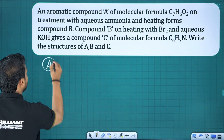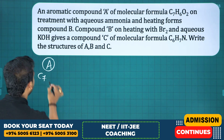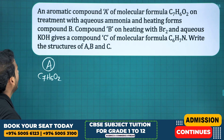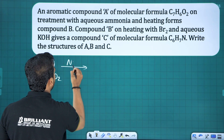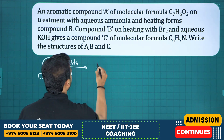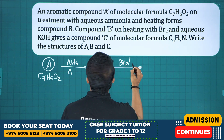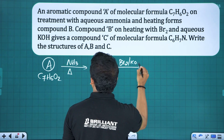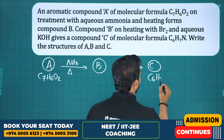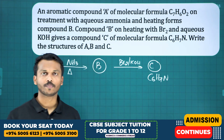Question number one: an aromatic compound A has the formula C7H6O2. On treatment with aqueous ammonia and heating, it forms compound B. Compound B on heating with bromine and aqueous KOH gives a compound C of formula C6H7N.